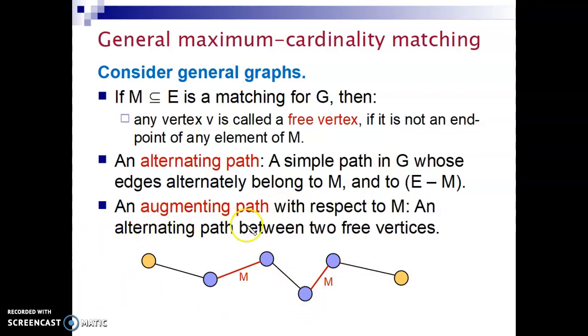What is an augmenting path? An augmenting path with respect to a matching M is an alternating path between two free vertices. So does this example meet the requirements of an augmenting path? You can stop the video and think a little bit. The answer is yes. This is also an augmenting path because it starts with a free vertex. It's an alternating path and it ends with another free vertex. So this is an augmenting path.